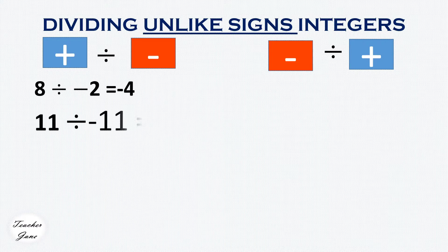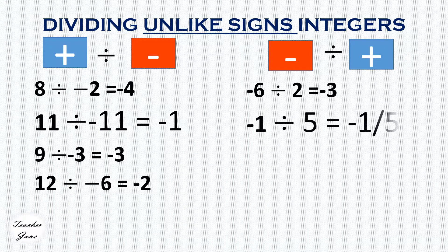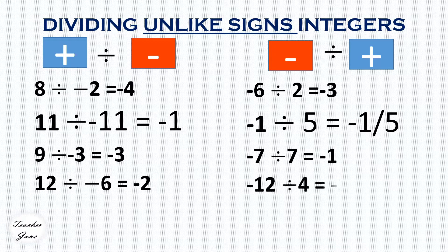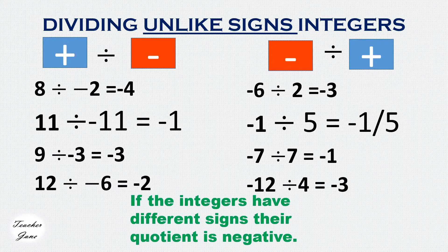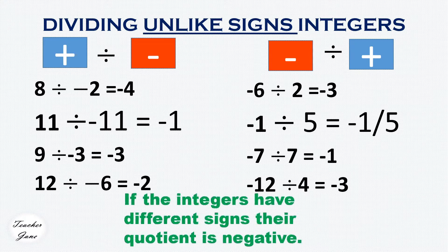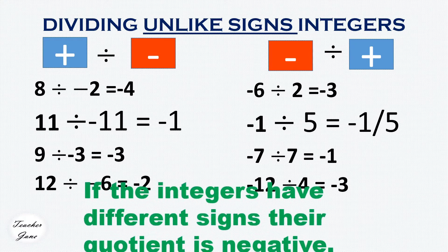Just like multiplying integers, when dividing unlike signed integers, the quotient is always negative. If we divide unlike signed integers, the quotient is always negative.